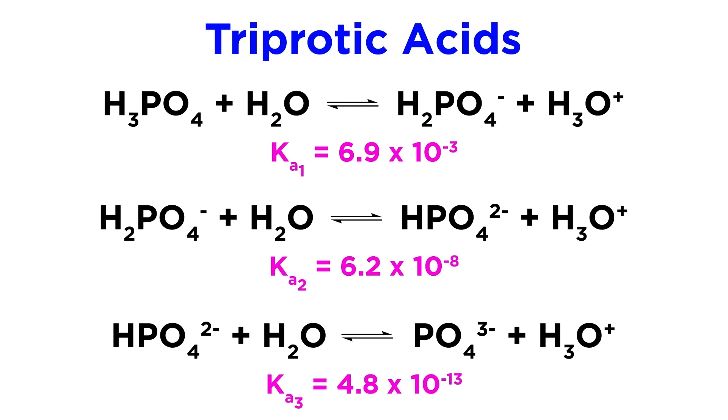Some acids can even be triprotic, meaning they can deprotonate three times. Phosphoric acid, or H3PO4, is such an acid.